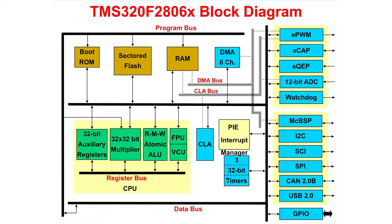The PIE block, or Peripheral Interrupt Expansion block, manages the interrupts from the peripherals. In the bottom right corner is the general purpose IO. Also, the CPU has three 32-bit general purpose timers available.